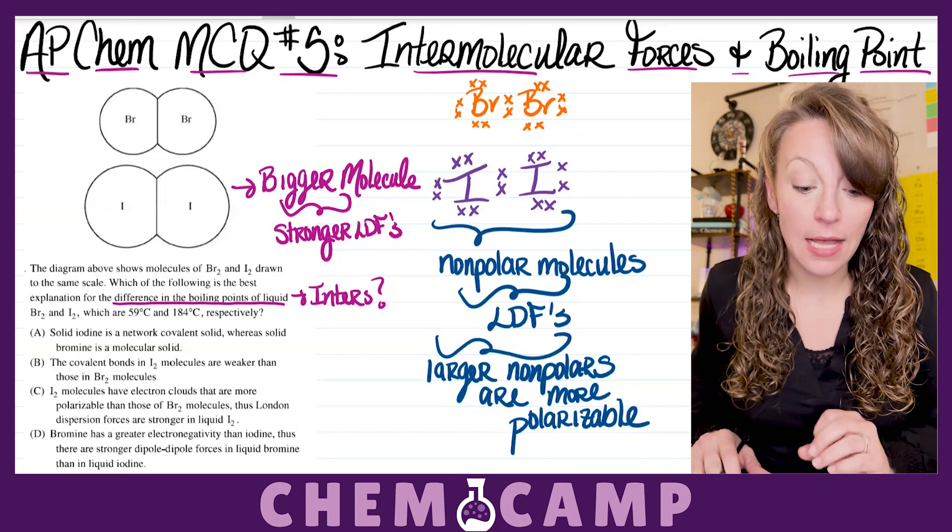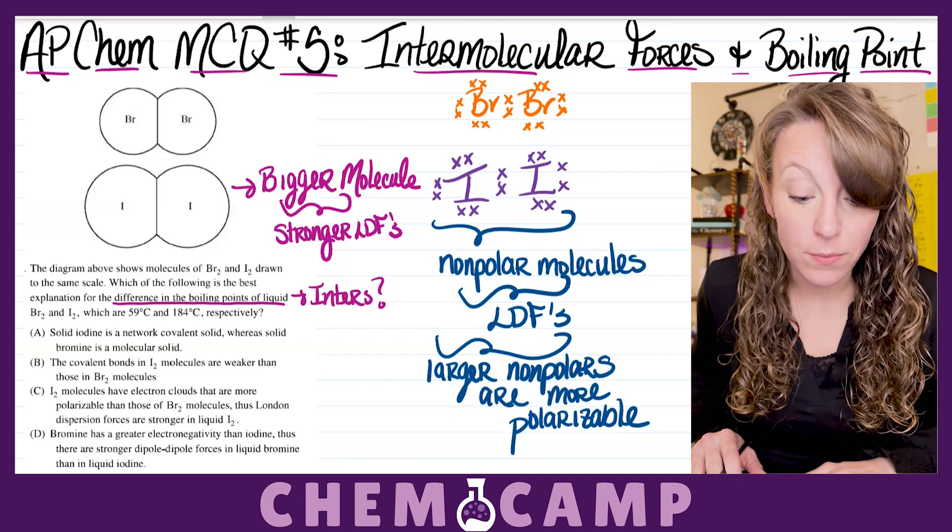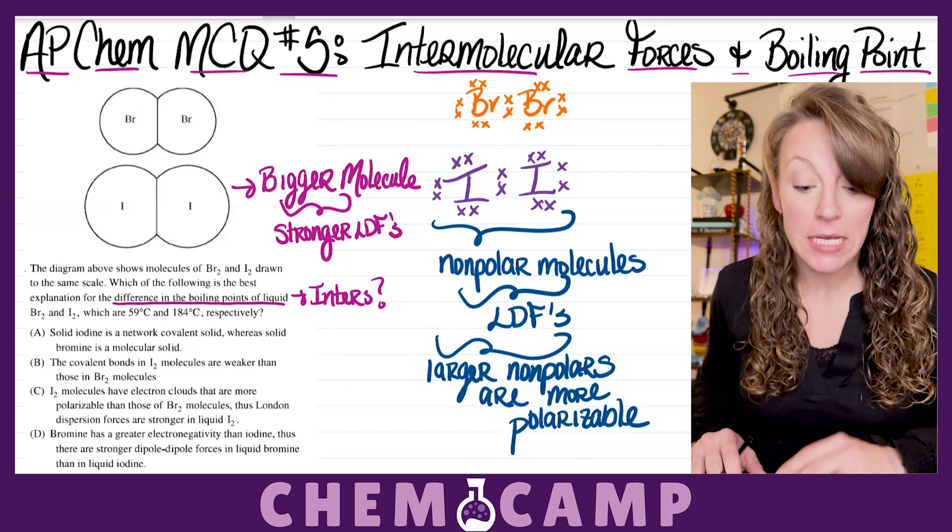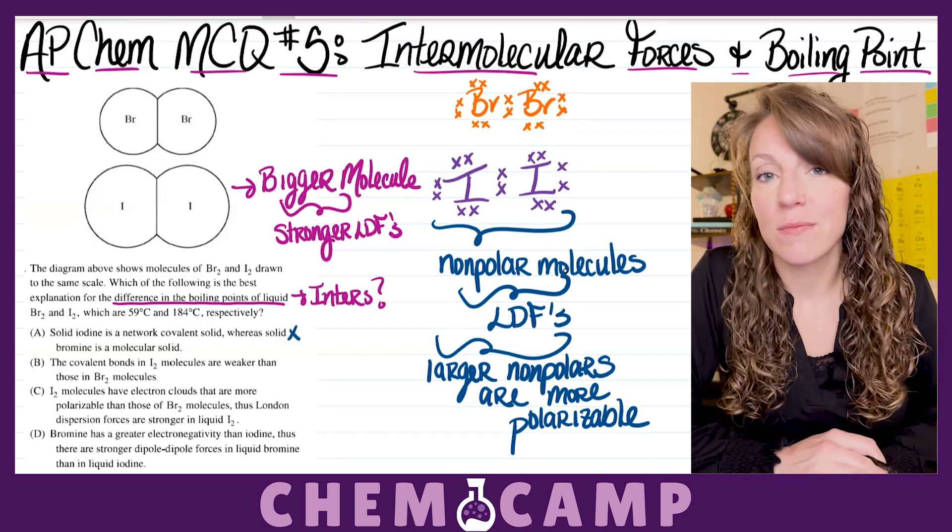In letter A, they tell us solid iodine is a network covalent solid, whereas solid bromine is a molecular solid. Well, this just isn't true. Your iodine is also a molecular solid.